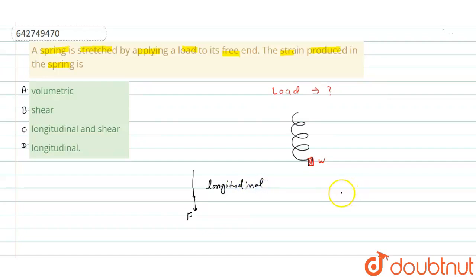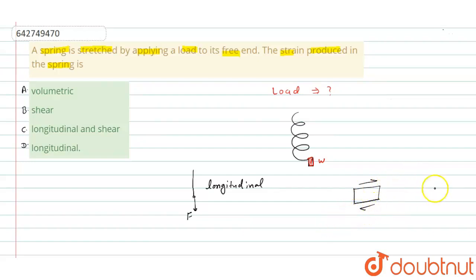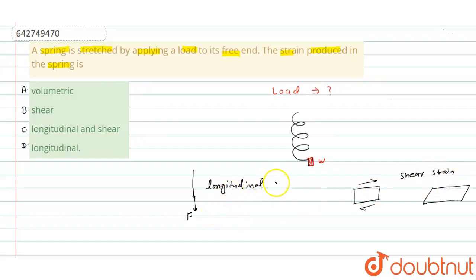Now let's talk about shear strain. Suppose we have a block like this, and we are applying a shear force — pushing the upper surface towards the right direction and the bottom surface towards the left direction. This block will deform. We can take a deck of cards as an example of shear force. This is shear strain, and what we described earlier is longitudinal strain.